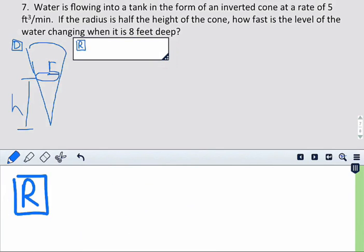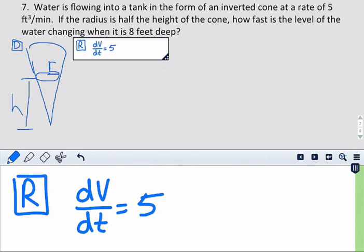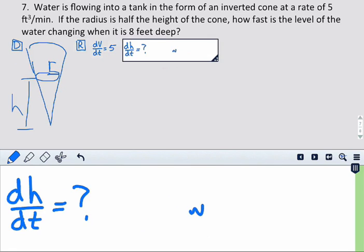Now, for our rates, we know that it's being filled at a rate of five cubic feet per minute, so dv over dt is gonna be five. Now, we're trying to find dh over dt, and we wanna find this rate when the water is eight feet deep, so when h equals eight.